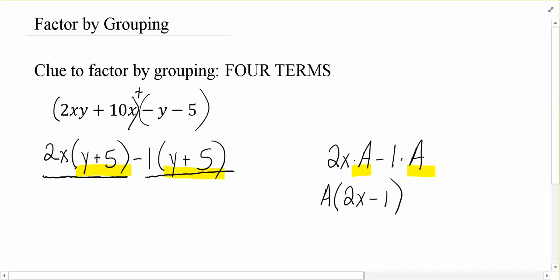Our entire second term there has a negative 1 and a y plus 5. Both terms have a y plus 5 in them. So we're going to bring that y plus 5 out in front, just like we brought the a out in front in the simple problem. Now, once I've factored a y plus 5 out of this first term, what's left?